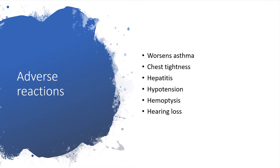Additional adverse reactions: In individuals with asthmatic history, pentamidine can worsen the situation and there is a likelihood of chest tightness and bronchospasm. Because of these reactions, you can place the patient on a bronchodilator before the administration of pentamidine.